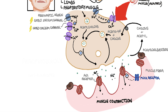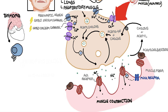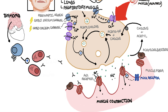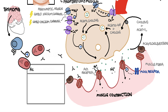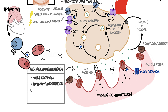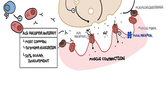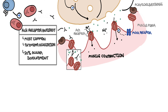Myasthenia gravis is an acquired autoimmune disorder of the neuromuscular junction characterized by weakness and fatigability of skeletal muscles. The exact etiology is unclear, but one theory is an association with hyperplastic thymus or a thymoma, which is a tumor from the thymus gland. Autoimmunity occurs at the T-cell and B-cell co-stimulation, which results in the development of antibodies against acetylcholine receptors (AChR). AChR antibodies are the most common antibodies found in myasthenia gravis and are associated with thymoma and strong ocular involvement.